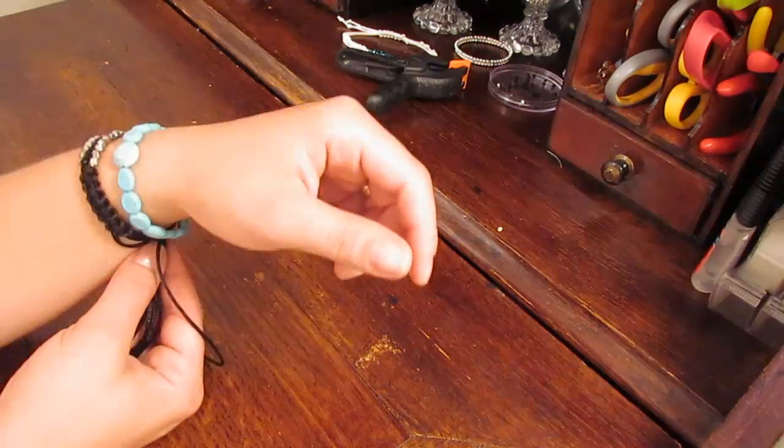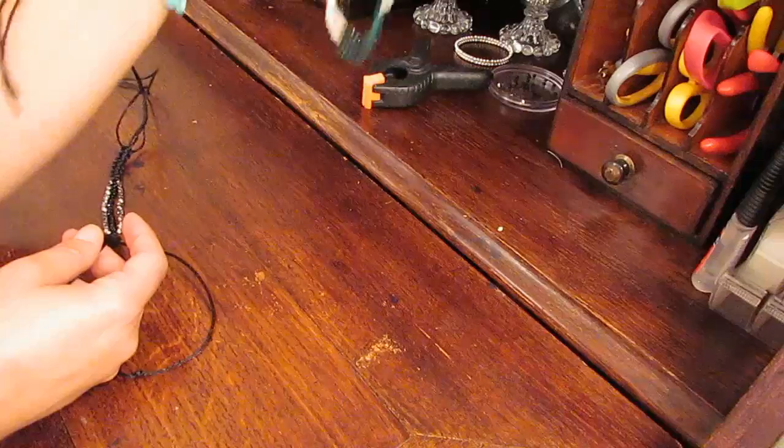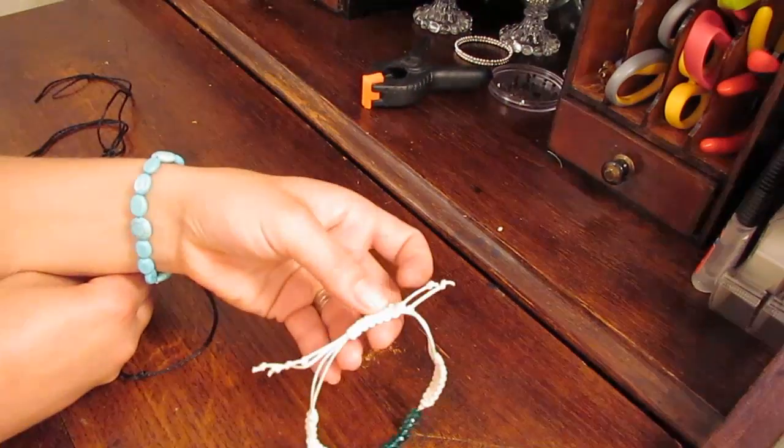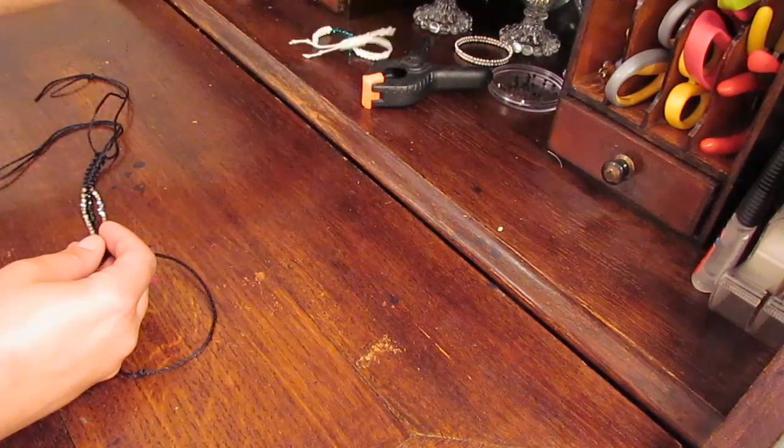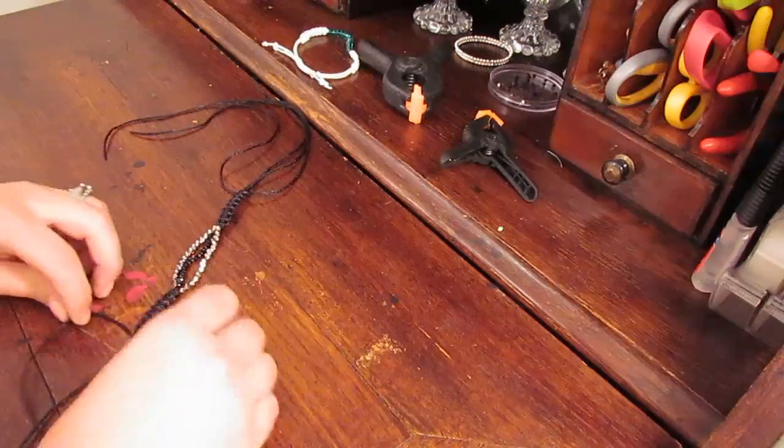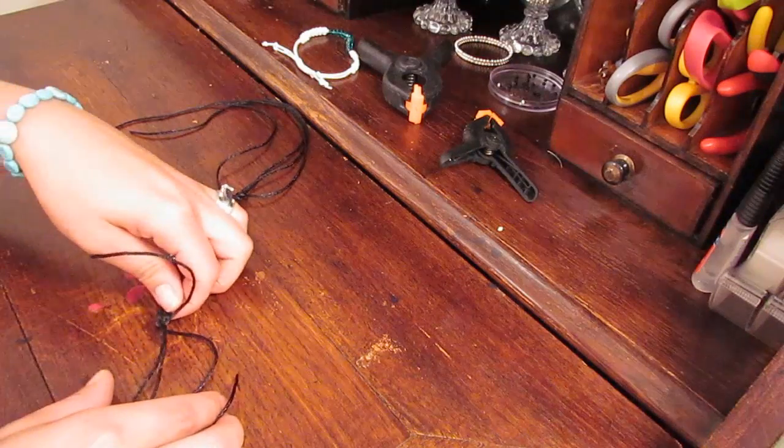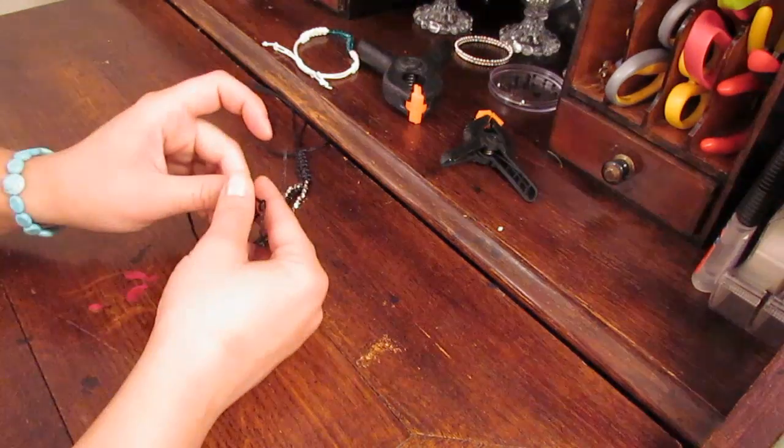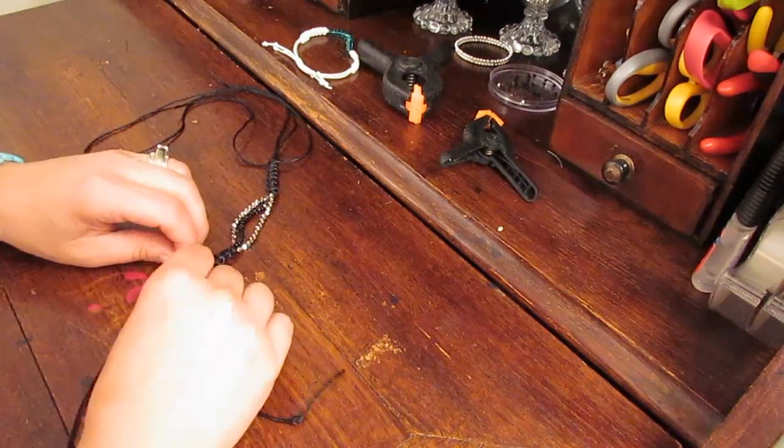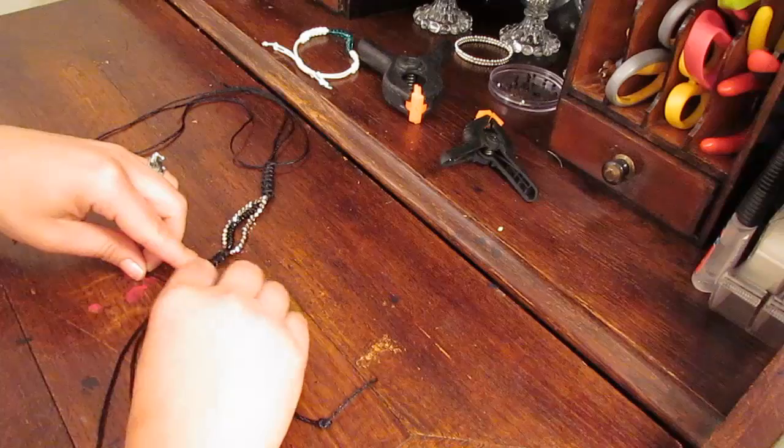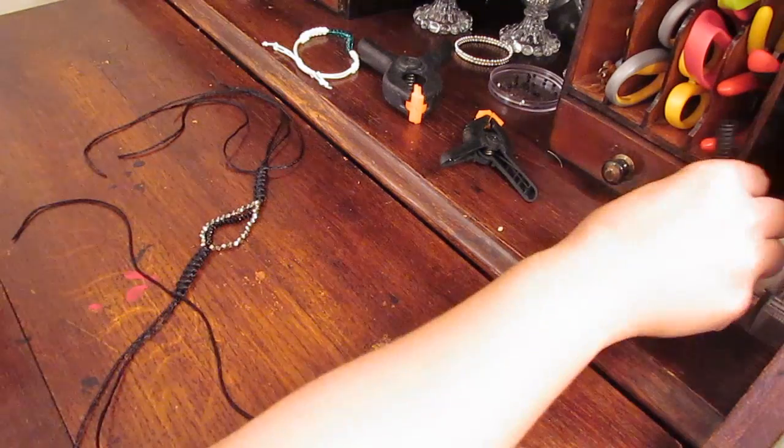I intend to do a button closure on this bracelet instead of the sliding knot closure. But if you need to know how to do that, that's also in the video I will post below. Finish off our square knots and I am just going to tie a regular knot and just try to make it as smooth as you can.